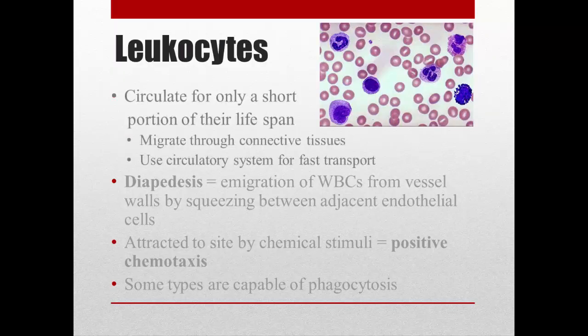Some general characteristics about leukocytes: they only stay in circulation for a short period of their life cycle, because the pathogens, bacteria, or tumors are not in the blood. We need to get those white blood cells out of the blood so they can migrate through the connective tissues and destroy these pathogens or tumor cells. So they only use the circulatory system as a way to get from point A to point B quickly.